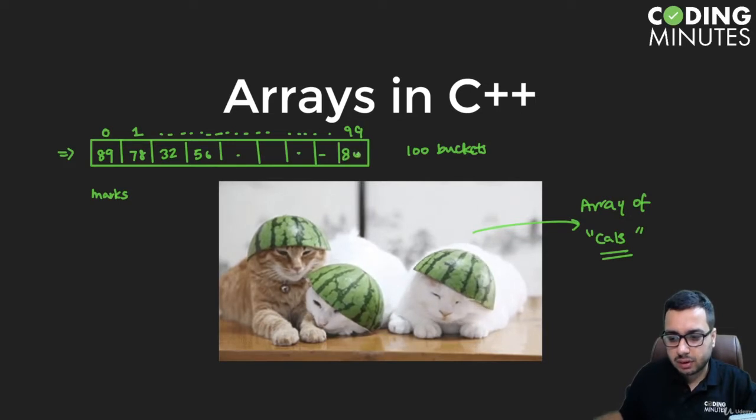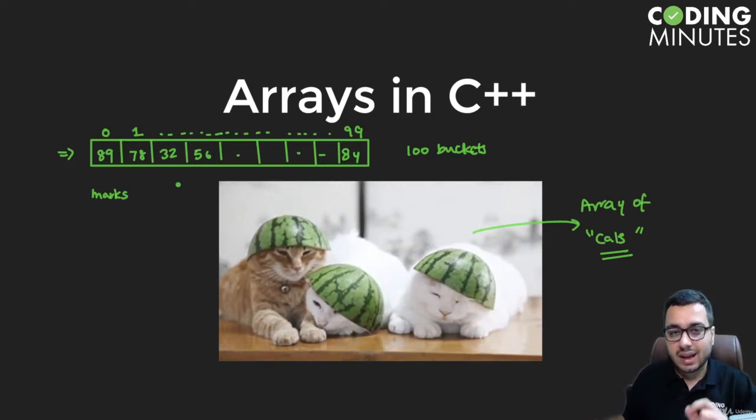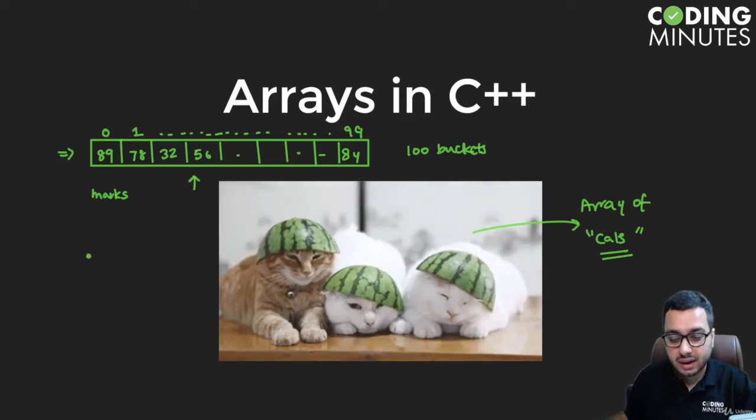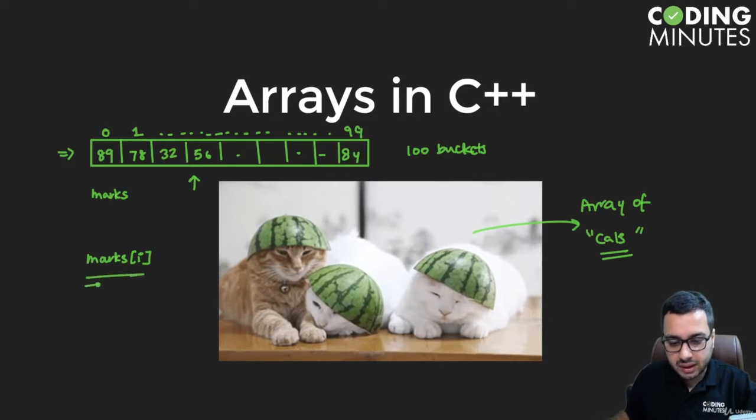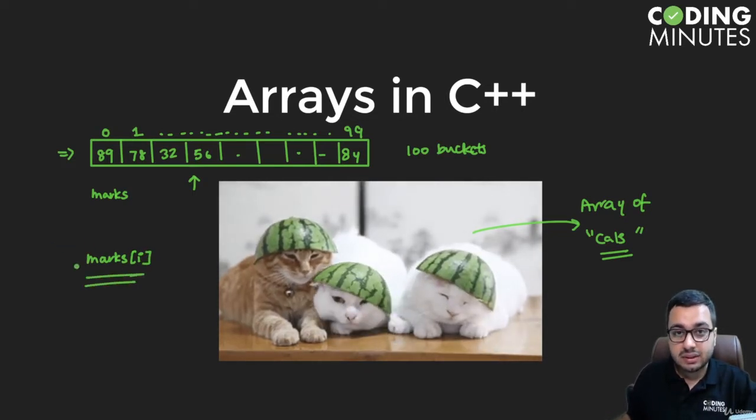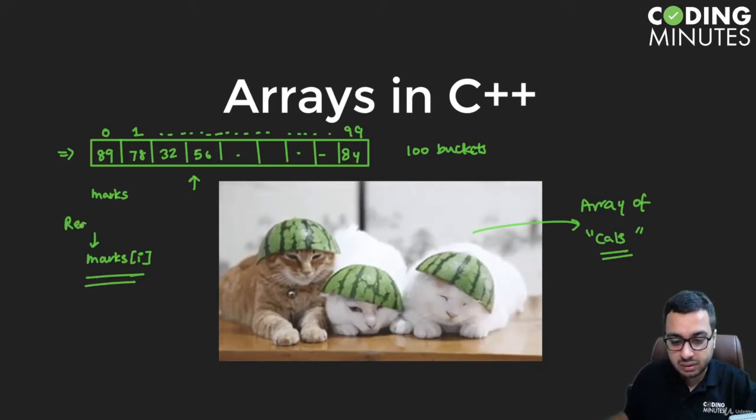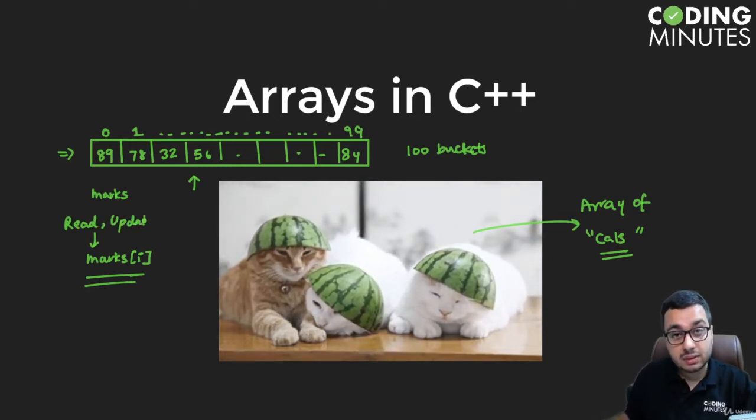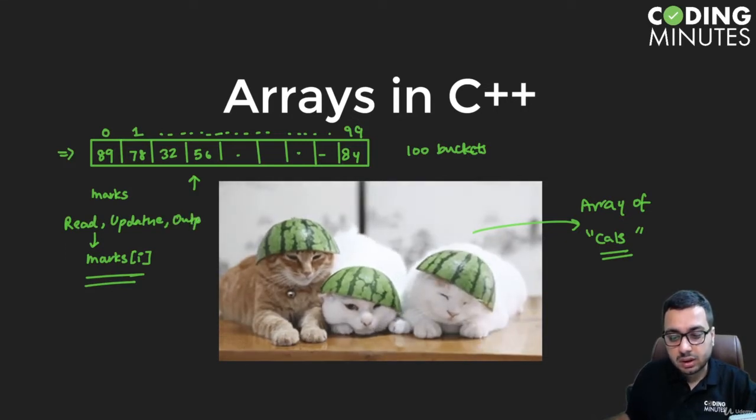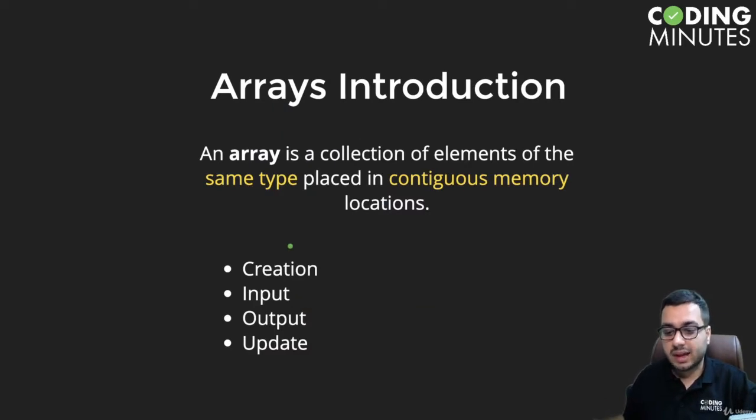Maybe this got 84. So what will happen is, how are you going to read this array, how are you going to write this array? You can access marks of any student by writing marks of i. So you can access the ith bucket by using this notation marks of i. So you can perform different operations - for example, you can read what are the marks of the ith student, you can update what are the marks of the ith student, you can even output what are the marks of the ith student.